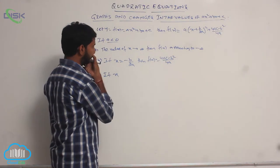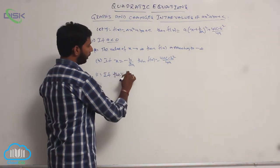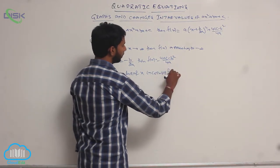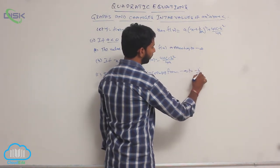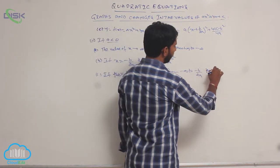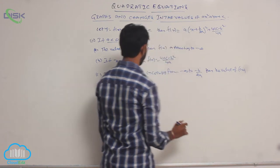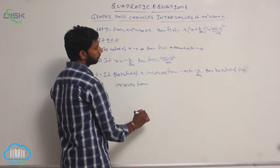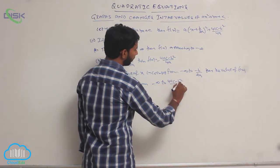If the value of x increases from minus infinity to minus b by 2a, then the value of f of x increases from minus infinity to 4ac minus b squared by 4a.